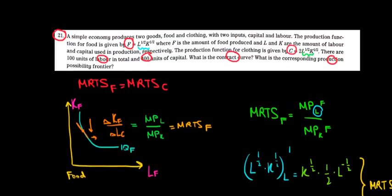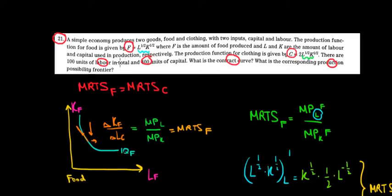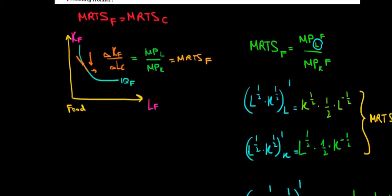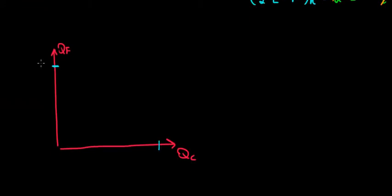For food production, looking at the food production function, we have at most 100 units of labor and 400 units of capital in the economy. Substituting in: 100 to the power one-half times 400 to the power one-half equals 10 times 20, so we would produce at most 200 units of food. That gives us our first intercept of 200 on the graph.